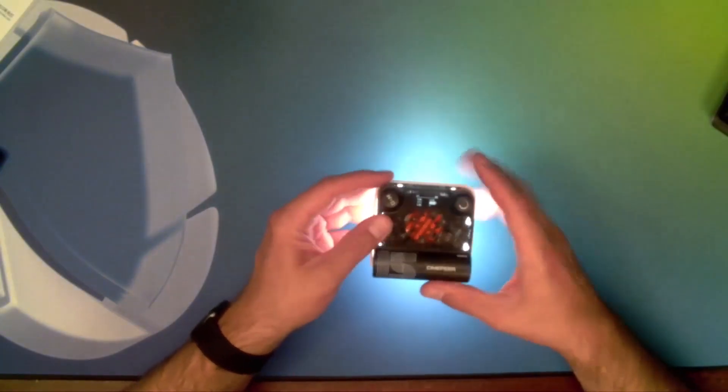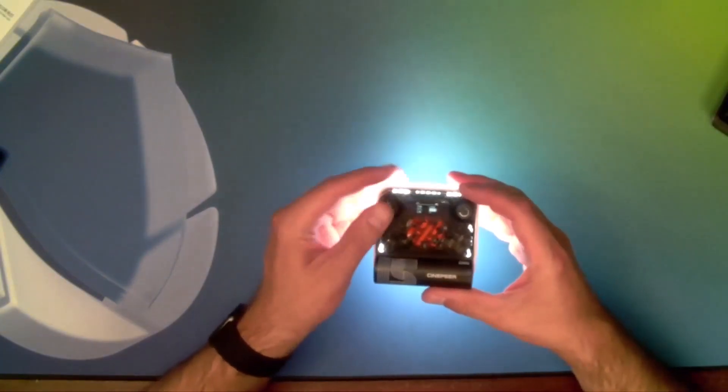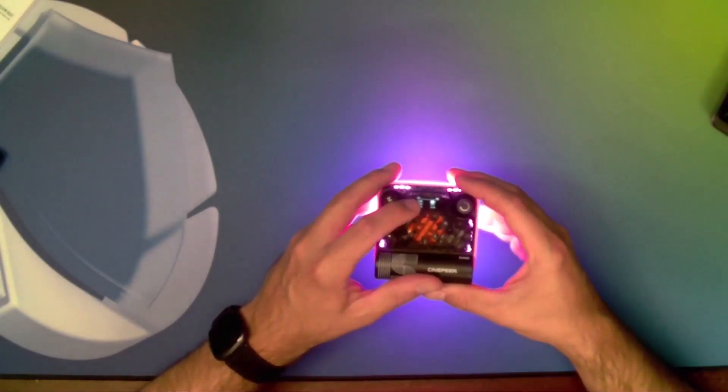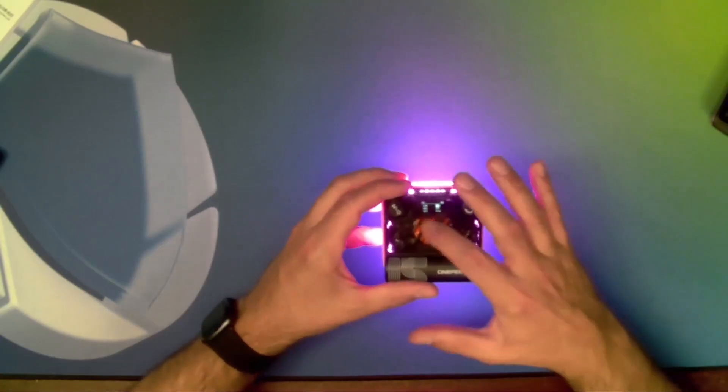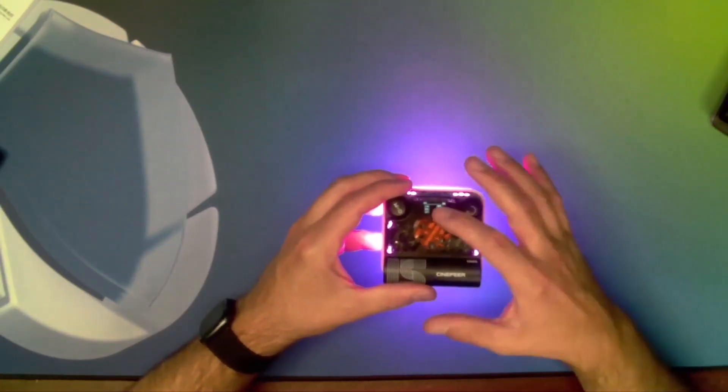Other modes are available by pressing the power button on the left. Press it in and you get HSI mode, which is hue, saturation, and intensity. There's a 360-degree color wheel to change the color.